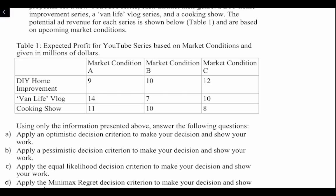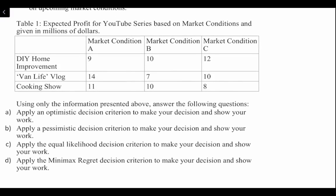Table 1 shows expected profit for a YouTube series based on market conditions, given in millions of dollars. We have our different genres — DIY, van life, and cooking — and then we have various market conditions: A, B, and C. We're unsure which market condition will prevail. We're then asked four questions: apply an optimistic decision criterion, a pessimistic decision criterion, an equally likely decision criterion, and apply the mini-max regret decision criterion.